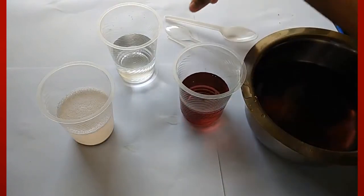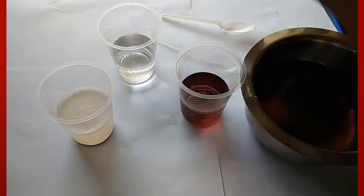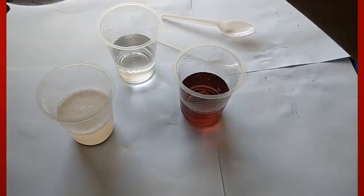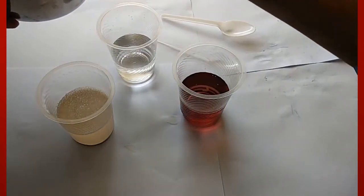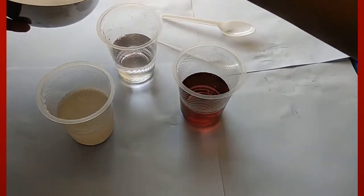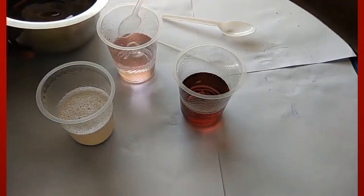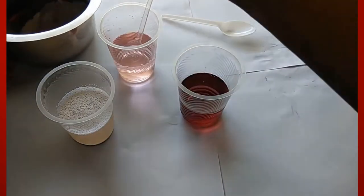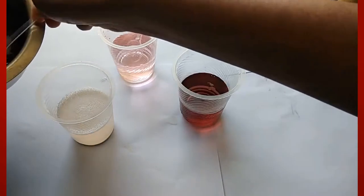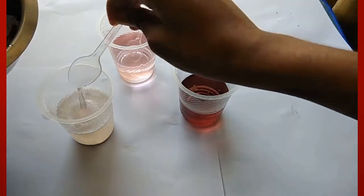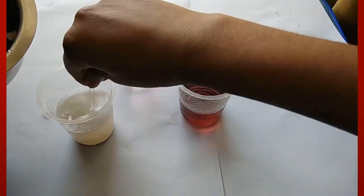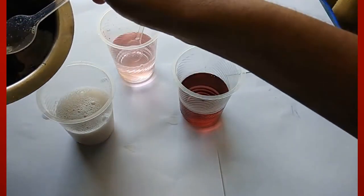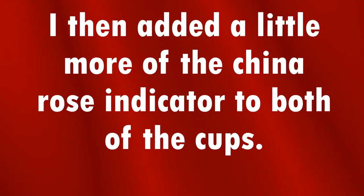Now I'm going to be taking a spoon and adding some of the china rose indicator to the vinegar, then I'm going to be stirring it well. I'm also going to add some of the china rose indicator to the soap water and stir it well too. I then added a little more of the china rose or the hibiscus indicator to both of the cups.